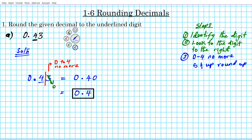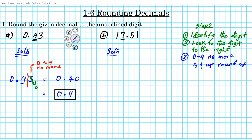Let's take a look at another example — number 1B. We're rounding 17.51 to the place that has the 7. Let's follow the steps. We have 17.51 and we're rounding to the 7's place. That's the digit already identified for us. We put up a partition and look at the digits to the right of it. The digit to the right of the 7 — is it 0 to 4 or 5 and up? It's a 5, so it's 5 and up. The rule for 5 and up: you round up.